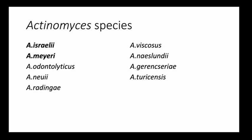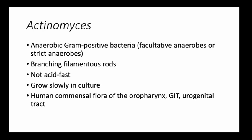The genus Actinomyces consists of anaerobic gram-positive bacteria — either facultative anaerobes or strict anaerobes. They have branching filamentous rods, are not acid-fast, and are slow growers, similar to fungi. They are also normal flora, mainly found in the oropharynx, gastrointestinal tract, and urogenital tracts.